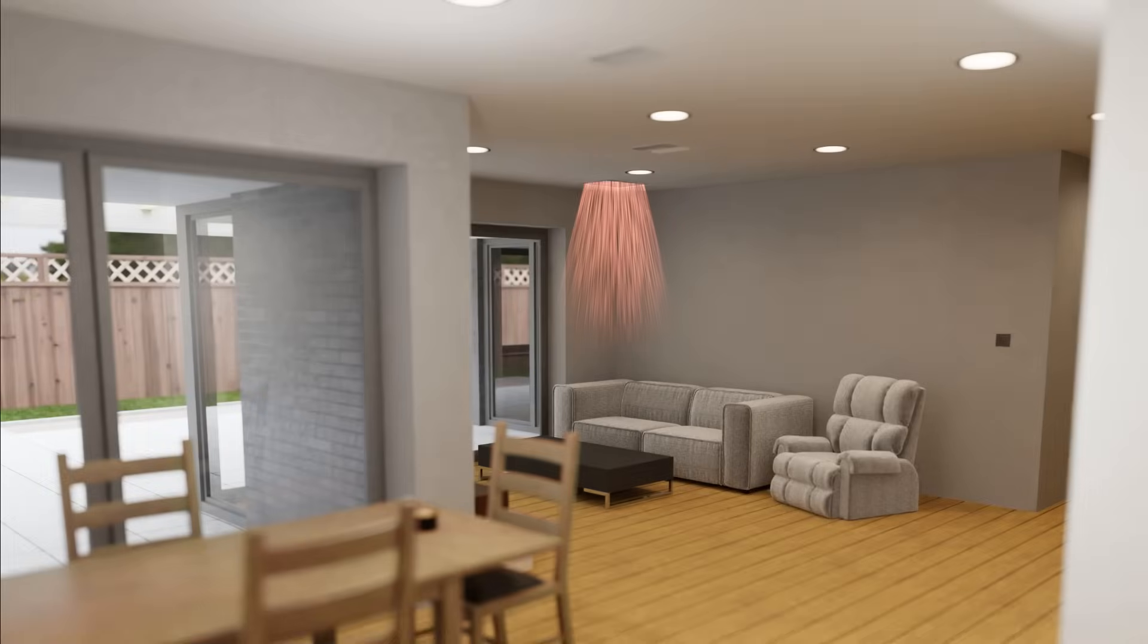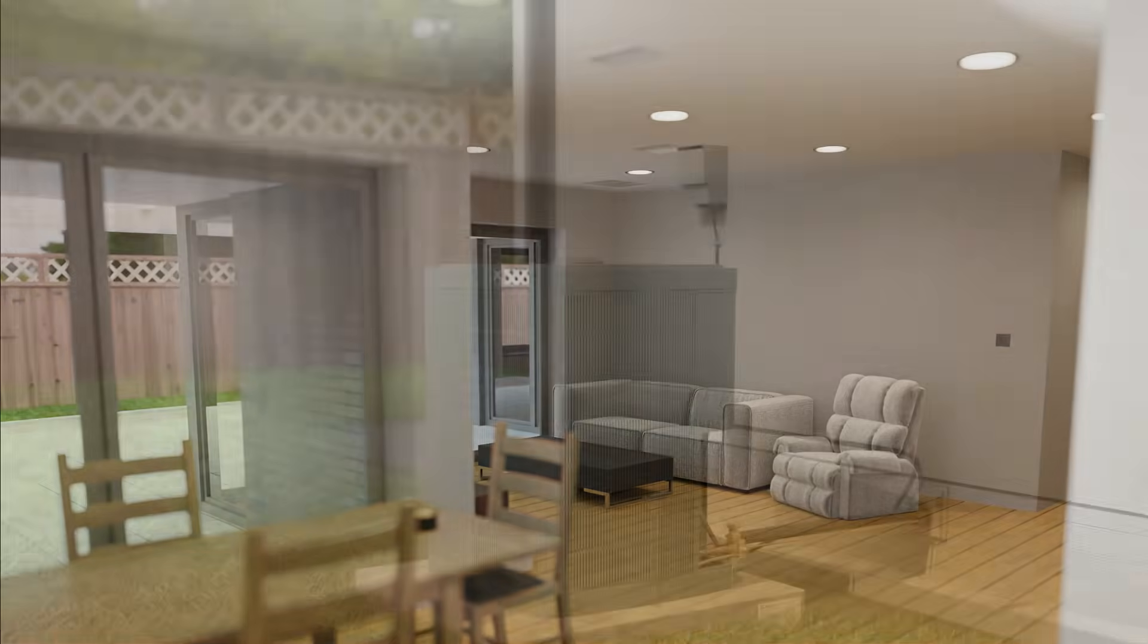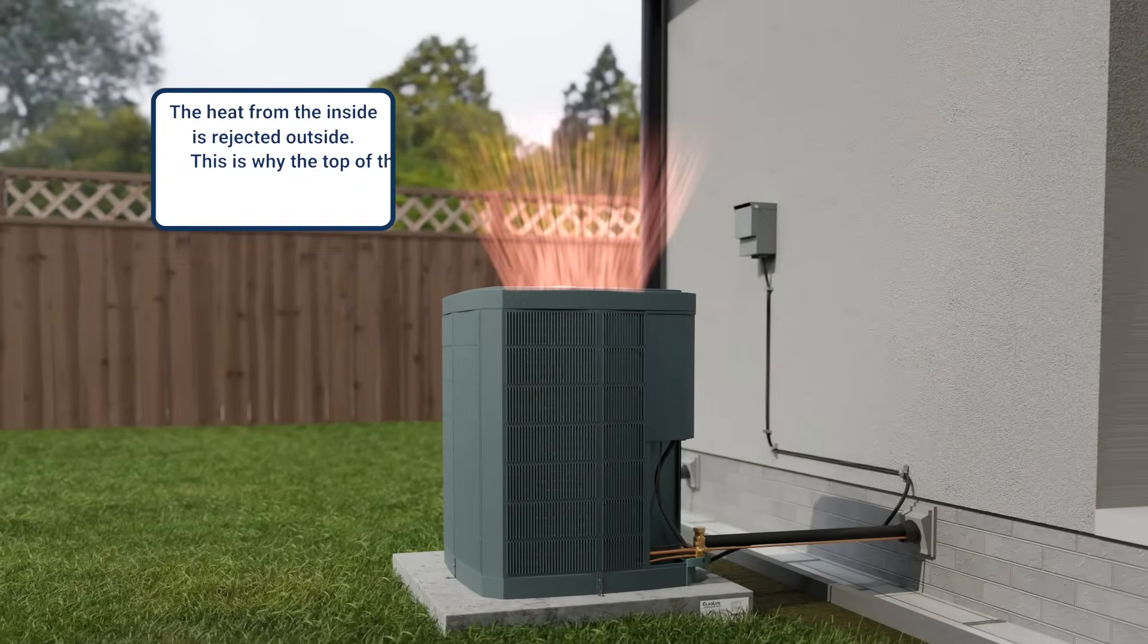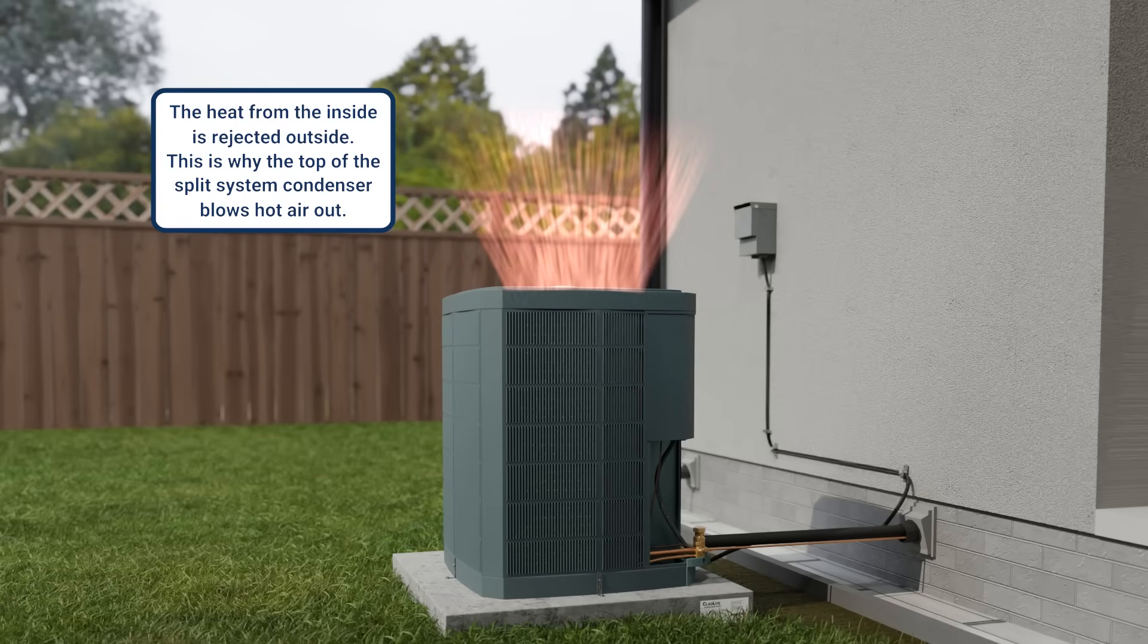In the case of your air conditioner at home, this heat is rejected outside. This is why, if you put your hand over top of a split-system condenser, you'll notice that it blows hot air out. That's the heat being rejected from inside the house.